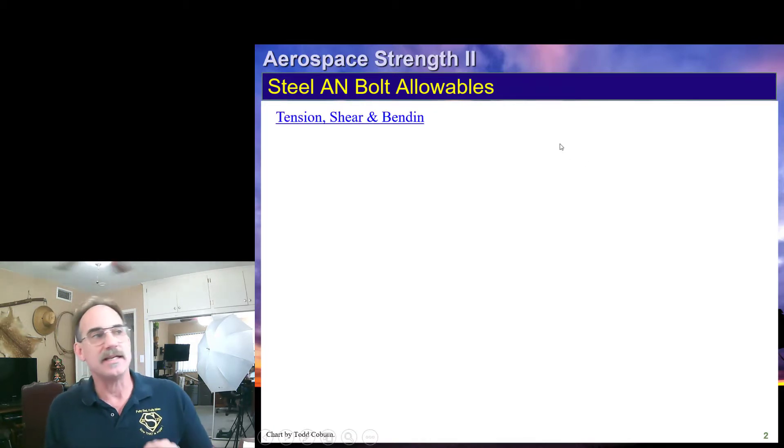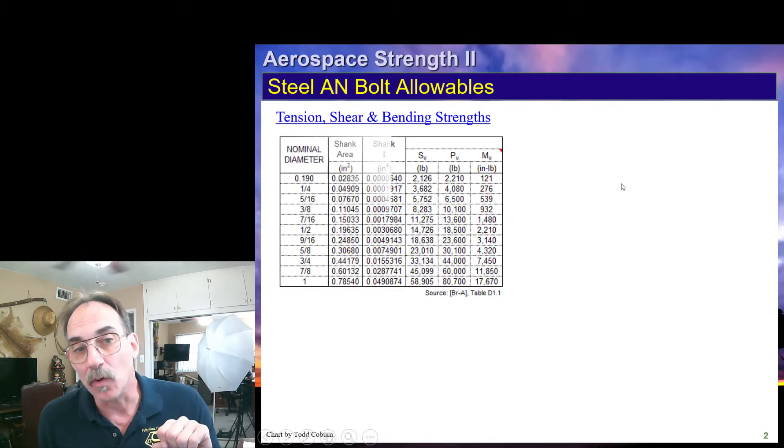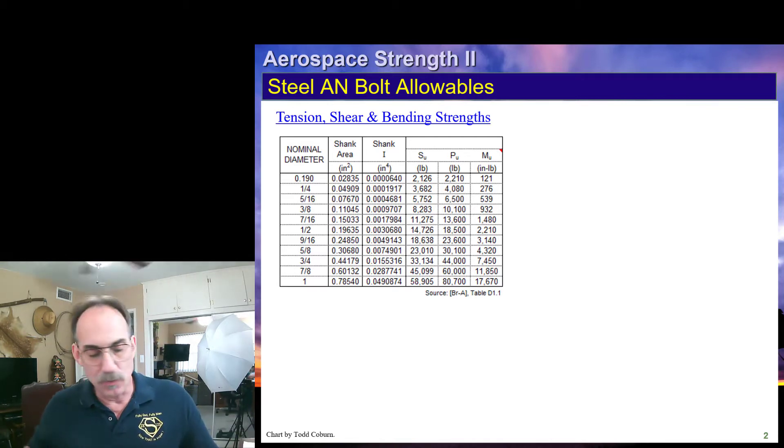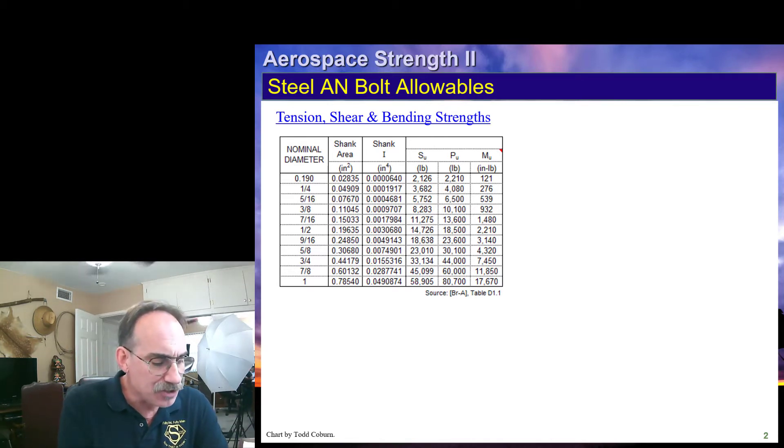First one is an Army-Navy bolt called an AN bolt. Whenever we encounter these kinds of bolts, we will get the allowables from this table here. You'll notice that we have shank information, the shank area, a shank moment of inertia, and the allowable in pounds for shear and tension, and the moment allowable.